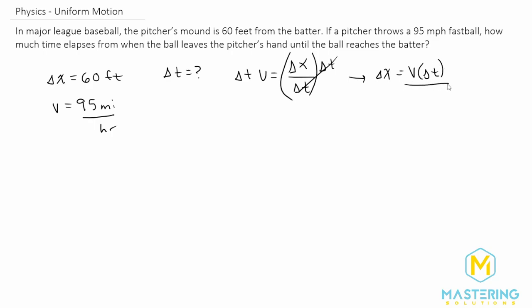But we want to isolate t. So we'll divide both sides now by velocity. So finally that gives us delta t is equal to delta x divided by velocity.